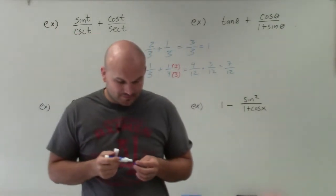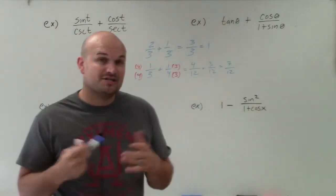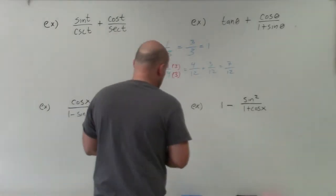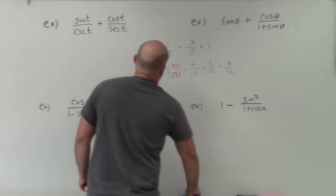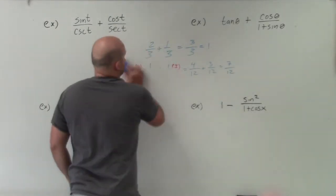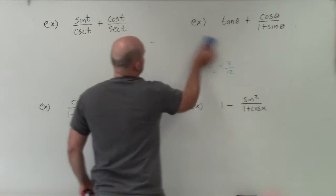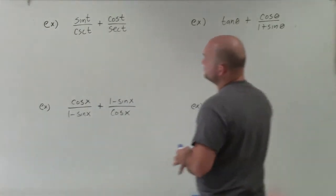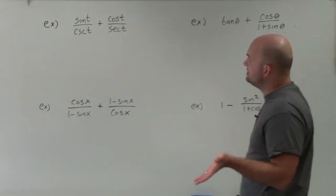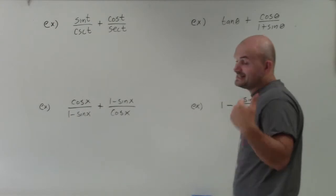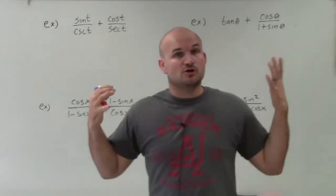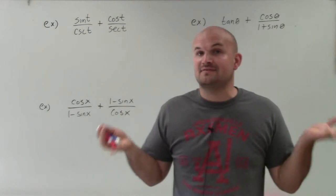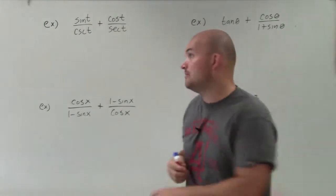This is just the basic fraction operations that we're going to apply now with trigonometric expressions. Let's go ahead and look at our first problem. You can see that we have cosecant of t and secant of t as our denominators, so to add them we have to have the same denominator.